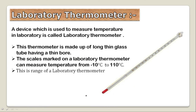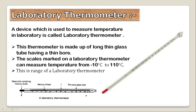This thermometer is made up of a long thin glass tube with a thin bore. The scale of a laboratory thermometer can measure a temperature from minus 10 degrees Celsius to 110 degrees Celsius. These temperatures are marked on the laboratory thermometer from minus 10 degrees Celsius to 110 degrees Celsius.